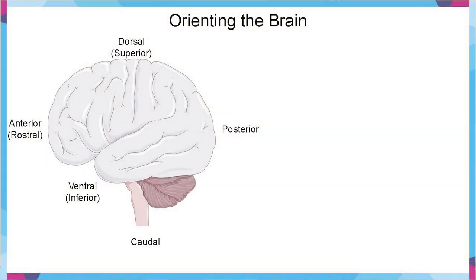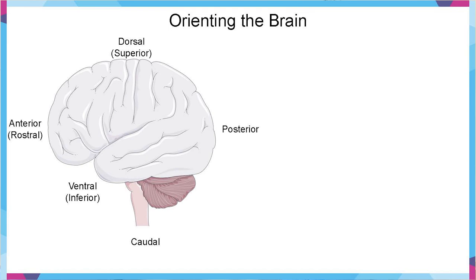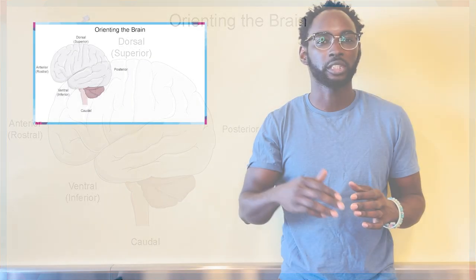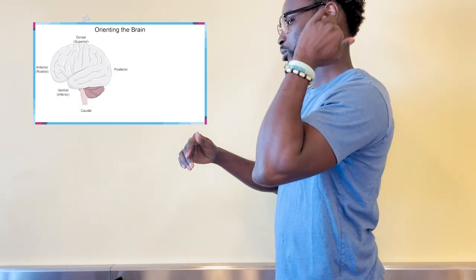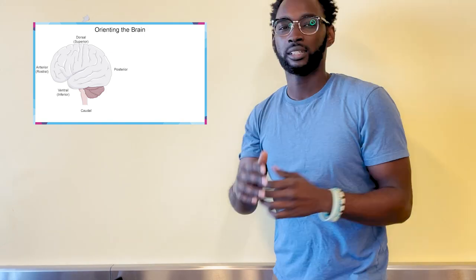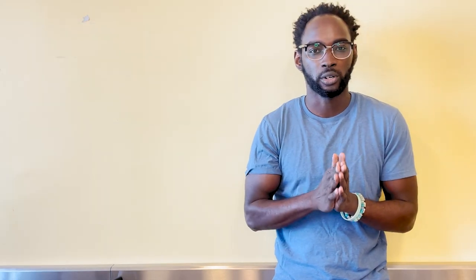Happy Brain Awareness Week everybody and welcome to Comparative Anatomy. Today we'll be talking about the brains of humans, rats, and many other species. But before we do that, let's get a little oriented to the brain. The brain can be oriented into many different areas. We can go from front to back, or anterior to posterior. We can go from top to bottom, which is dorsal and ventral. And we can also go from rostral to caudal, which is from front this way to down the spinal cord — also front to back.